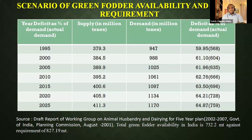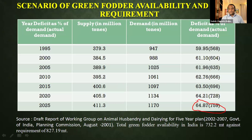The fodder shortage data is very confusing — some say shortage is 10 percent, while some government agencies say it is deficient by 65 percent. Out of 100 kg of fodder needed, we have just 35 kg available; the rest 65 kg is simply not available. This is from a Government of India Five-Year Plan report, stating we are deficient every year by 65 percent.